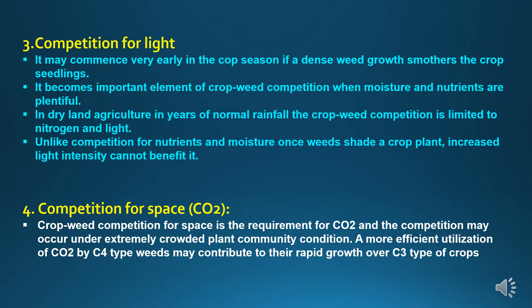Third is competition for light. It may commence very early in the crop season if a dense weed growth smothers the crop seedlings. It also becomes an important element of crop-weed competition when moisture and nutrients are plentiful. In dryland agriculture, in years of normal rainfall, crop-weed competition is limited to nitrogen and light. Unlike competition for nutrients and moisture, once a weed shades a crop plant, increased light intensity cannot benefit it.